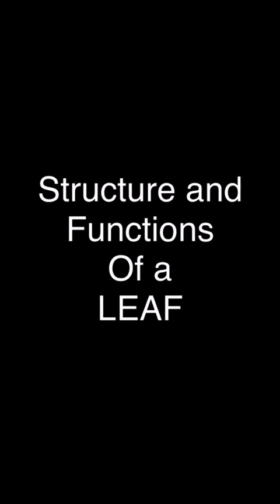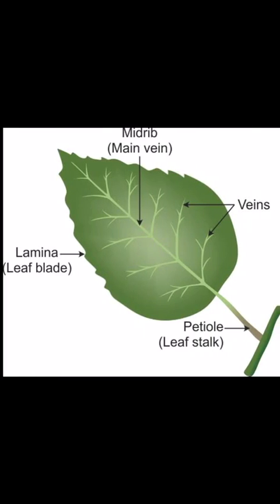Now, structure and function of a leaf. This is a part of a leaf: midrib, lamina, petiole and veins. This is a part of the leaf.